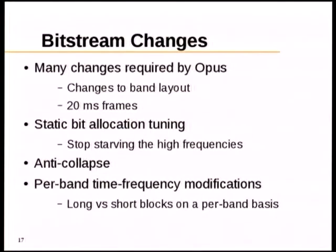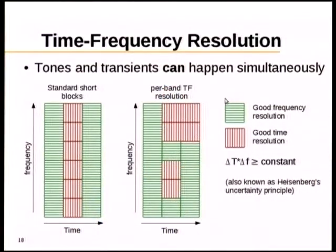Another major bitstream change was per-band time-frequency modifications, allowing the equivalent of long blocks and short blocks on a per-band basis rather than per-frame. The fundamental trade-off is between good frequency resolution and good time resolution — the product of time resolution and frequency resolution cannot be lower than a constant, which is called Heisenberg's uncertainty principle, and we're just stuck with it.